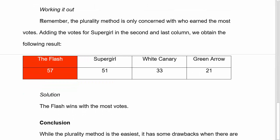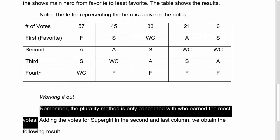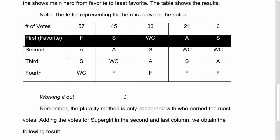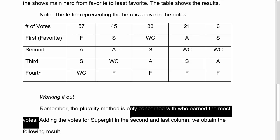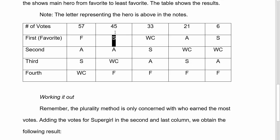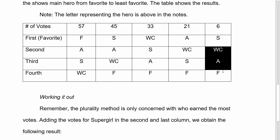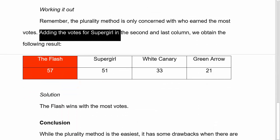So working it out — the plurality method is only concerned with who earns the most votes. I just need the top row, whoever's the favorite. Adding all the votes for Supergirl in the second and last column: Supergirl was first with 45 votes, and also first with 6 votes, with the rest of the characters in a different order. So we add those votes for Supergirl and end up with 51.